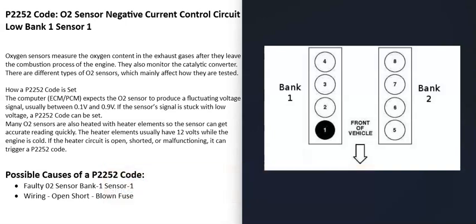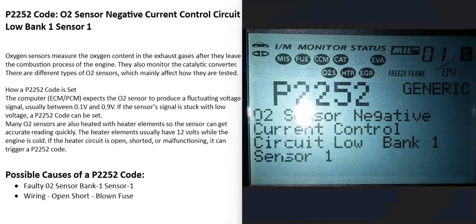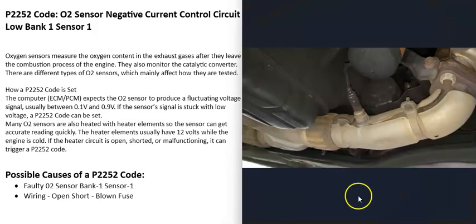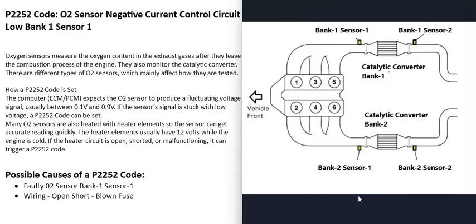If you have a four-cylinder engine, the engine will only have one bank. The main things that cause a P2252 code are either the bank one sensor one O2 sensor has gone bad and needs to be replaced, or there's an issue with the wiring going to it.